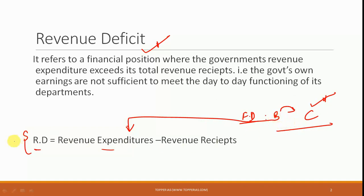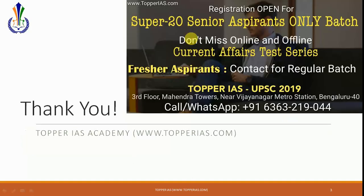So revenue deficit is a type of deficit which shows us the health of a government — whether a government can generate enough to cover its own expenditure is what is reflected in revenue deficit. That's all about revenue deficit. Thank you all for watching this video.